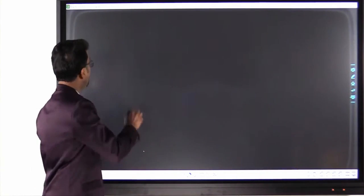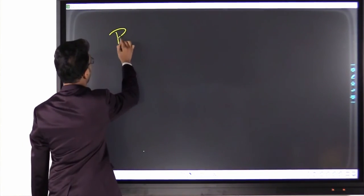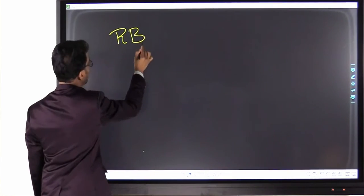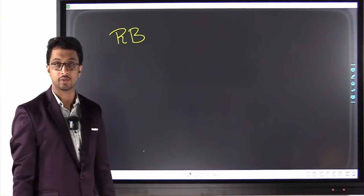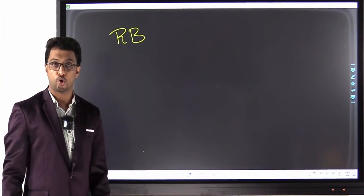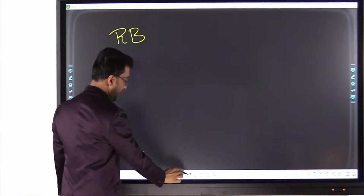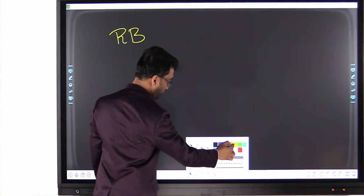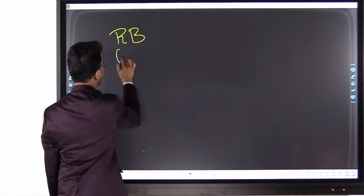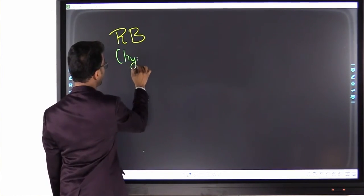Now a small recap on RB gene, what we learned in cyclin and cyclin dependent kinases. We studied that RB gene is an on-off switch and it is active in which form? Phosphorylated or hypophosphorylated? It's active in hypophosphorylated form.